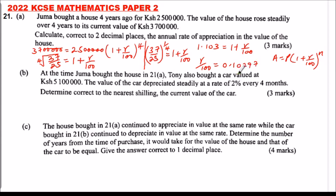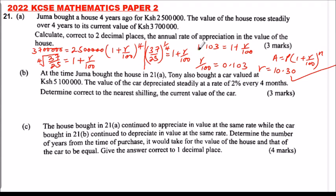When you multiply both sides by 100, you get r equal to 10.3. So the rate at which the house was appreciating is 10.30%. That gives you three marks for part A.